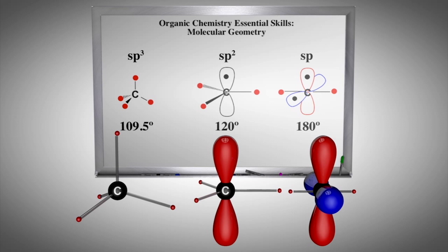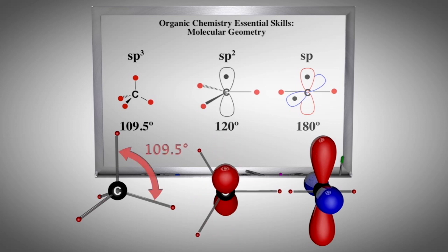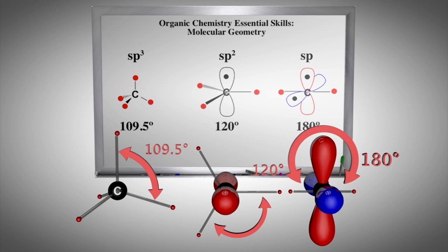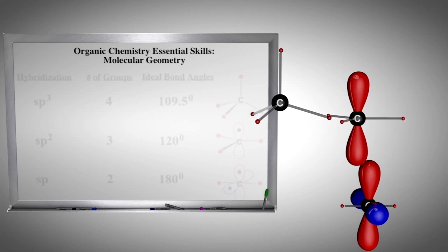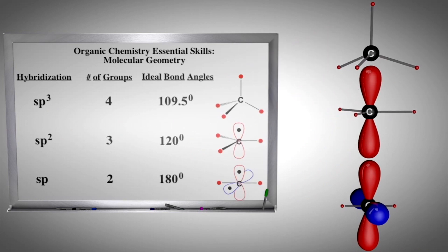Thus, the student should be able to visualize these hybrid building blocks in three dimensions to deduce the ideal bonding angles between different atoms: 109.5 degrees for sp3, 120 degrees for sp2, and 180 degrees for sp. An easy way to deduce hybridization of a central atom is to count groups around the atom.